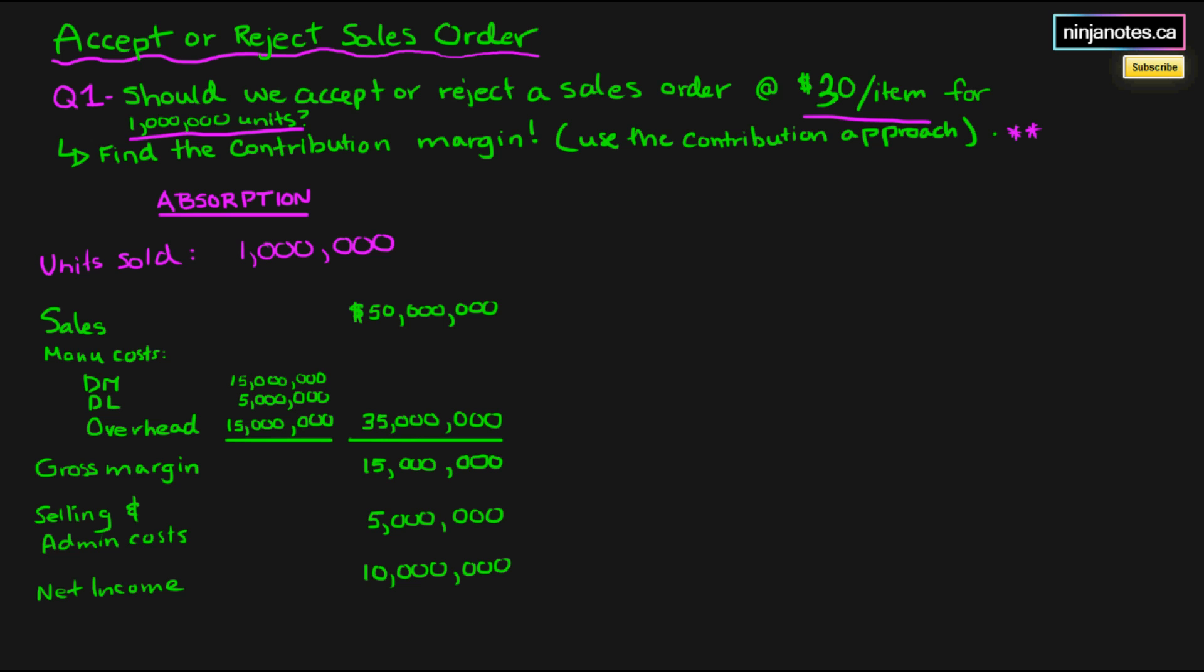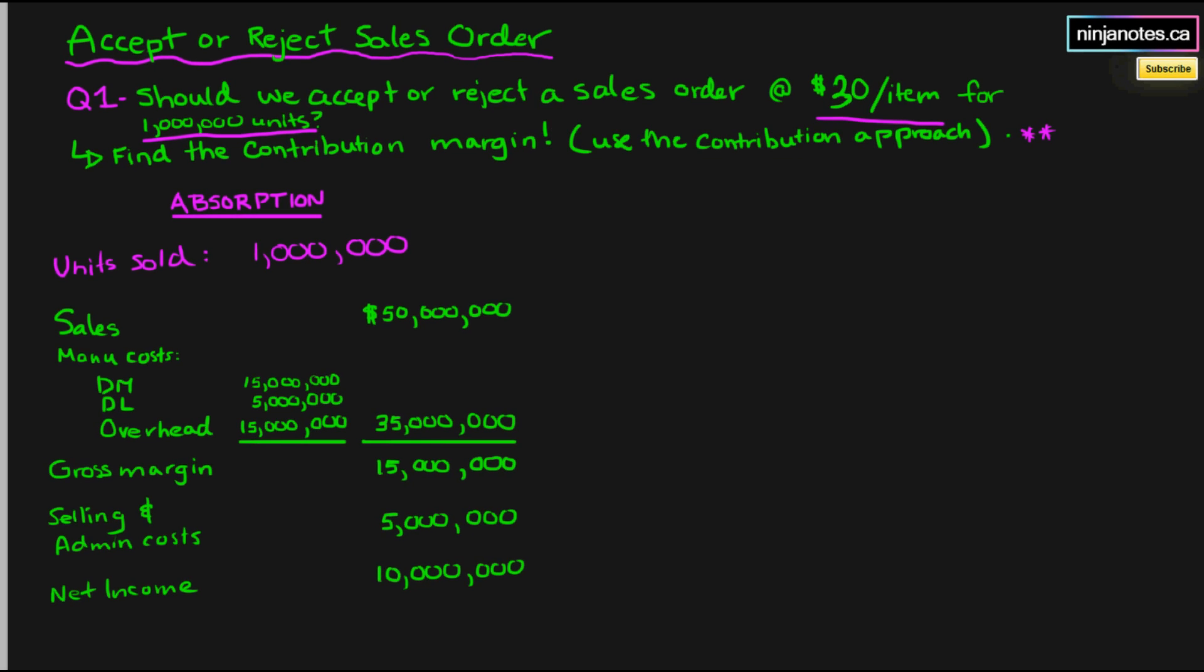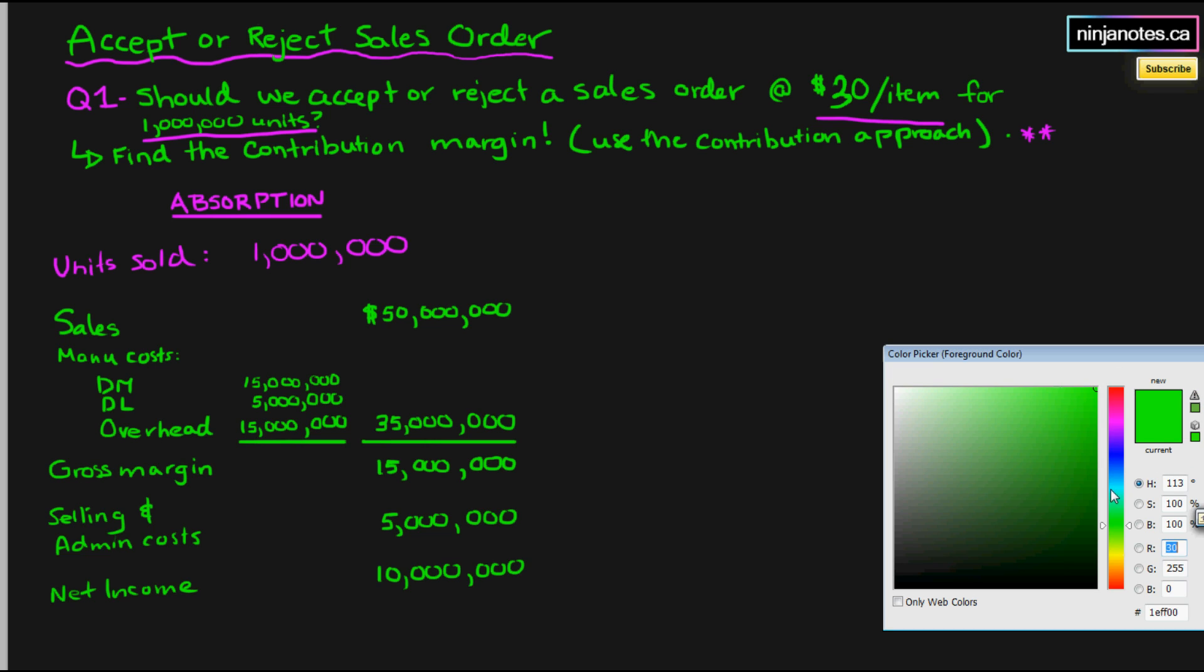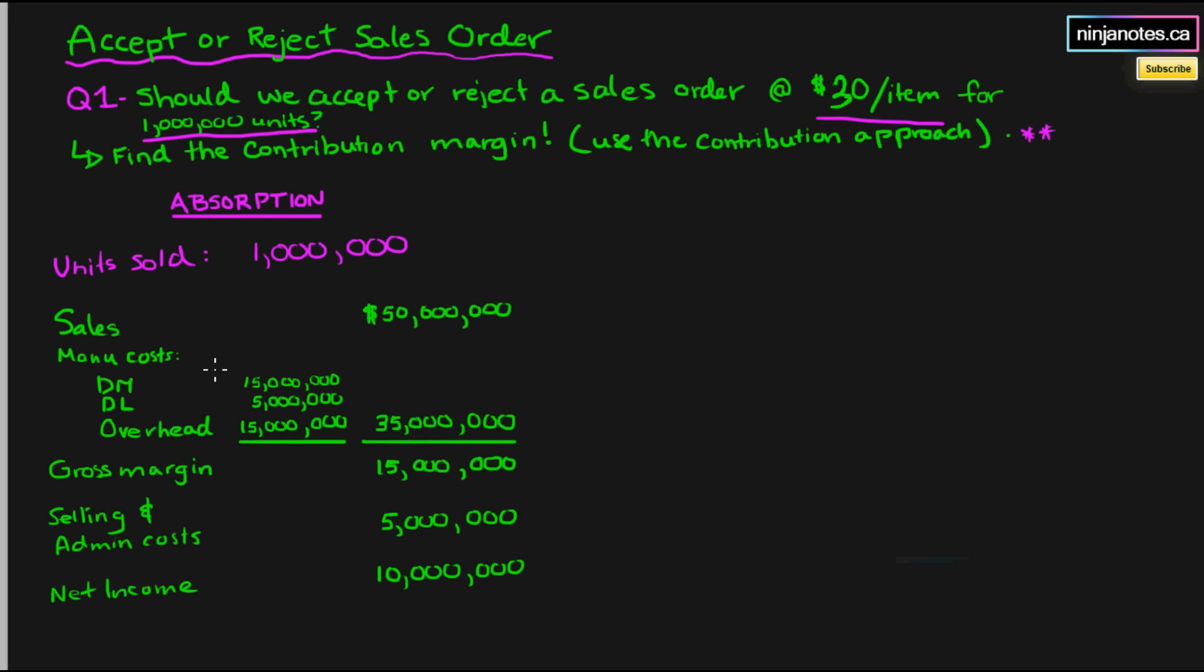The first income statement is right there and this is the absorption income statement. Remember that this has to do with the fixed cost being grouped up in the manufacturing cost. Sales we have right here, fifty million. We have one million sales from these fifty million units, which means ordinarily we are selling for fifty dollars a unit.